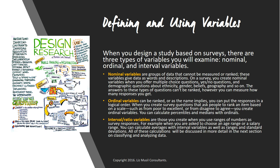In non-experimental research you do not manipulate an independent variable, often because you cannot or should not. Therefore you study independent variables through surveys and case studies. For example, planners hoping to set up high-speed rail on the west coast can't immediately put a system in place and test whether people will use it. Instead, planners conduct surveys with the public and set up case studies to gather data about who would use the train and how popular it would be. Studies based on surveys and case studies do not reveal cause and effect, but you can gather enough data to propose a theory which you may eventually test with an experiment.